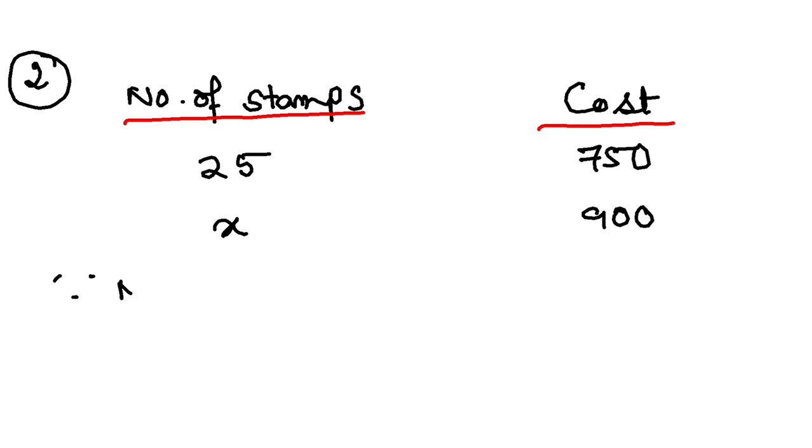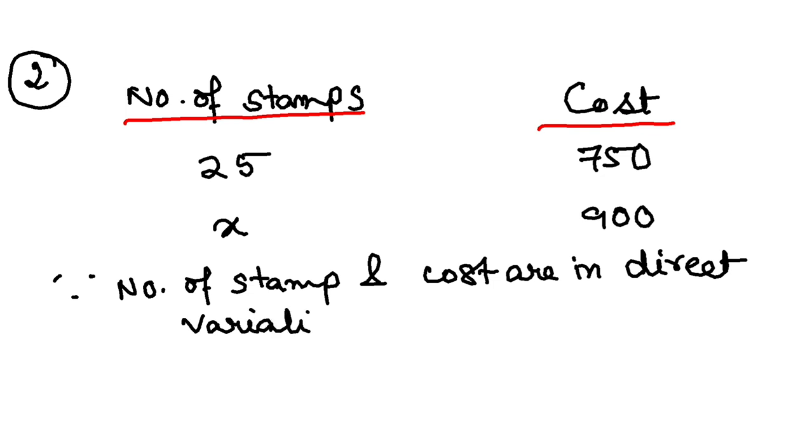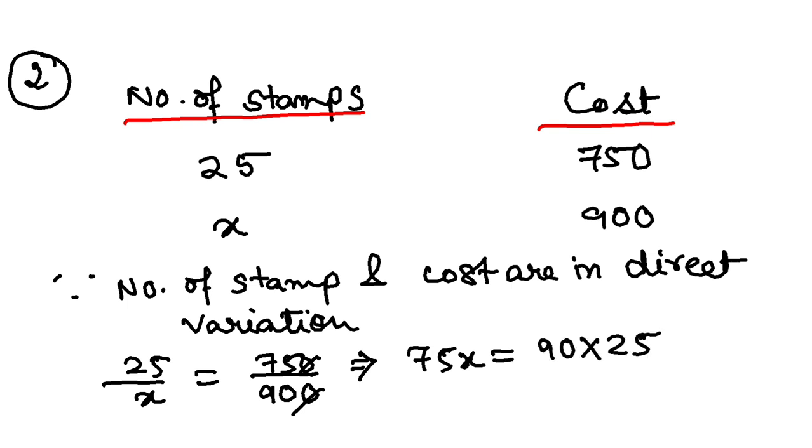Since number of stamps and cost are in direct variation, the ratio is the same. So 25 by x should equal 750 by 900. I have to solve this one. Cross-multiply: 75x equals 90 times 25, so x equals 90 times 25 divided by 75.